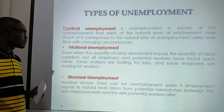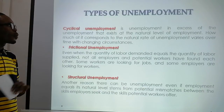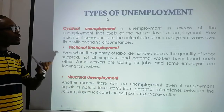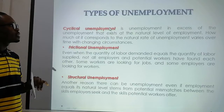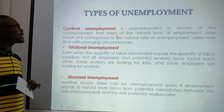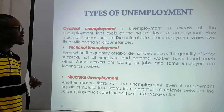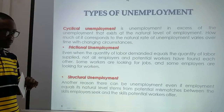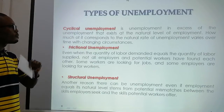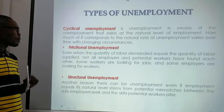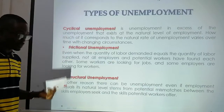Let's consider some types of unemployment. First, cyclical unemployment — this is unemployment in excess of the unemployment that exists at the natural level of employment. The natural rate of unemployment varies over time with changing circumstances. Cyclical unemployment is the type that economists always focus on.